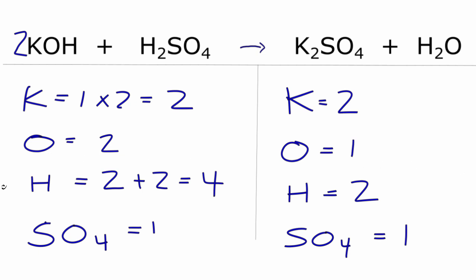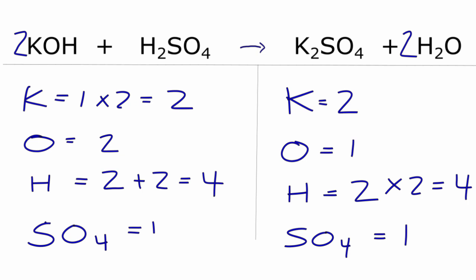Let's fix the hydrogens — we'll leave the oxygens until last. I have two hydrogens here on the product side and four on the reactant side. If I put a coefficient of 2 in front of H₂O, then 2 times 2 equals 4, and now the hydrogens are balanced. Then let's update the oxygens: I have 1 times 2, so that means I have two oxygens.